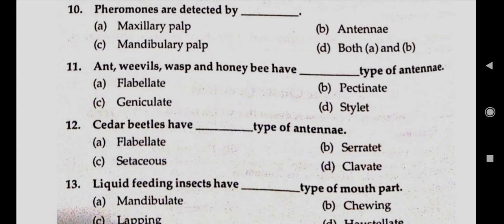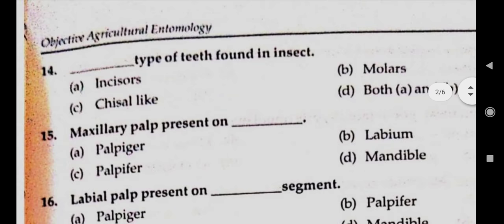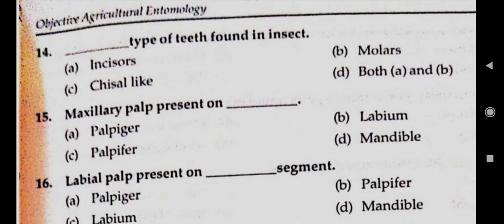Question number thirteen: liquid feeding insects have dash type of mouthparts. Answer D, slit type. Question number fourteen: dash type of teeth found in insects. Answer is D, both A and B — A means incisors, B means molars. Question number fifteen: maxillary palp present on. Answer A, palpiger.